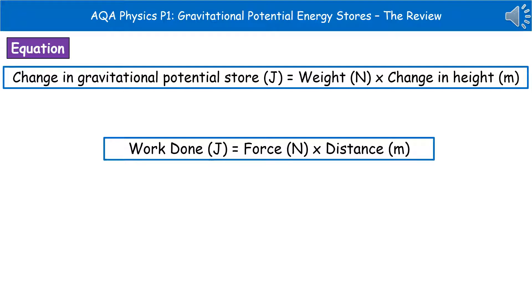The next thing is we've got another equation we need to learn. This is one on your list of equations you've got to know for your physics exam. The change in gravitational potential store is the weight times the change in height. If you look at the work done equation we've already looked at previously, work done is force times distance—it's just the same thing. We've changed the words work done to change in gravitational potential store. Weight is just the force and the change in height is just the distance.